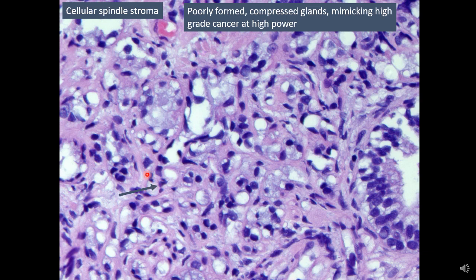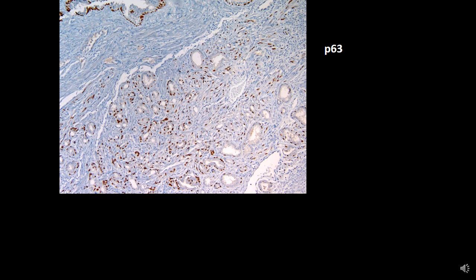The stroma surrounding these glands also has a hyalinized appearance. Note that if you miss the low power appearance and jump directly to high power magnification, this lesion can be very easily misclassified as prostate adenocarcinoma grade group 4 or 5, because you have numerous poorly formed glands, compressed glands, signet ring cell type cells, blue mucin, and even single cells. So this is a great mimicker of high grade prostate cancer.